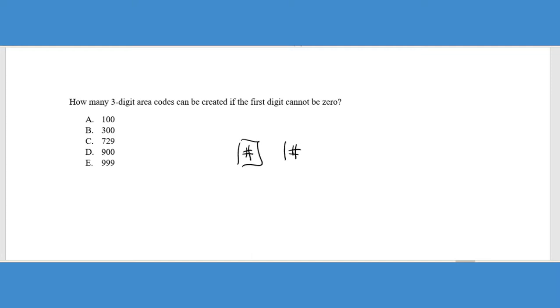It says how many three digit area codes can be created if the first digit cannot be zero. So these are my digits. I have three digits in my area code, but I know that whenever I'm doing an area code on a phone number, the first one has to be some value other than zero. So if we think about the digits, that's one through nine. So whenever they say the word digit, we're talking about zero, one, two, three, and you can see we have 10 digits here if you include the zero, but the first one can't include the zero. So we only have nine digits to choose from.